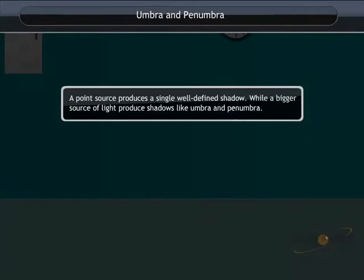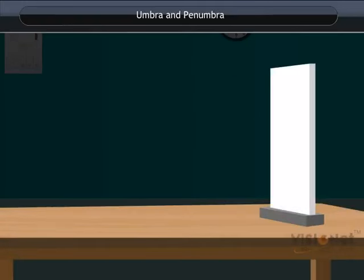Umbra and Penumbra. A point source produces a single well-defined shadow, while a bigger source of light produces shadows like Umbra and Penumbra. Let us carry out an activity to understand Umbra and Penumbra.